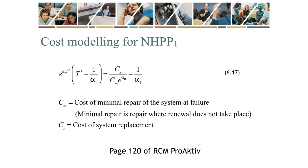Here is the equation for finding the optimal value of T — called T-star — for model NHPP1. The right-hand side of equation 6.17 is a constant. Through an iterative search, the optimal value T-star can be found such that the left-hand side equals the right-hand side. Or, one can again make use of the Excel Goal Seek function. We will use this approach. In the case of NHPP2, the optimal value T-star can be found through direct calculation.